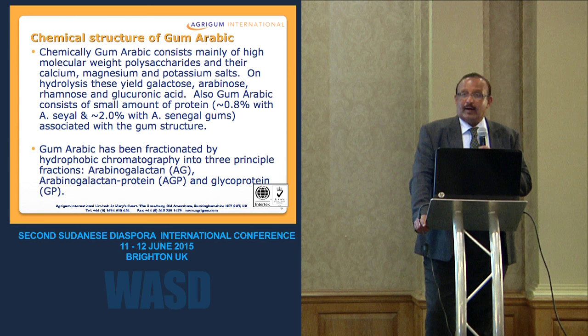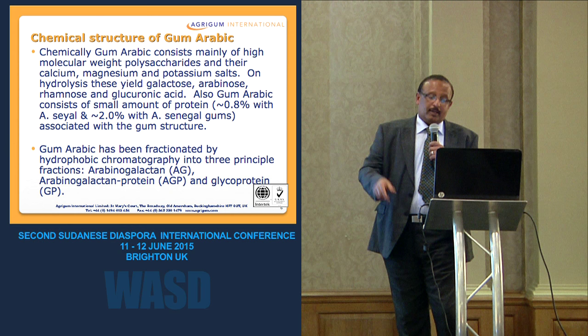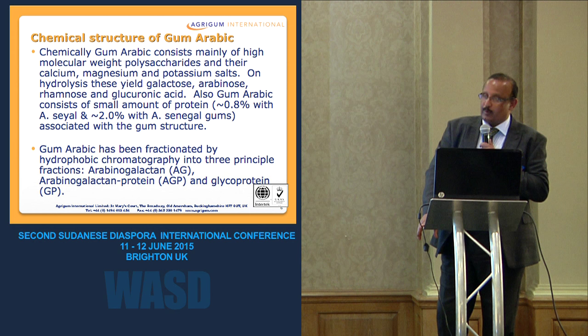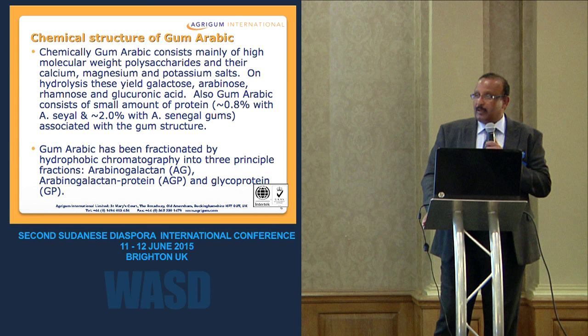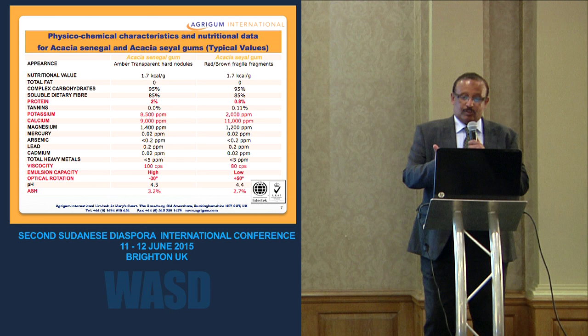The gum has been fractionated by a technique called hydrophobic chromatography, producing three principal fractions: arabinogalactan, arabinogalactan protein, and glycoprotein. The arabinogalactan protein — the AGP — plays an important role in the emulsification process of the gum, which we will discuss later.